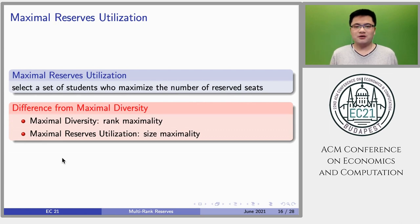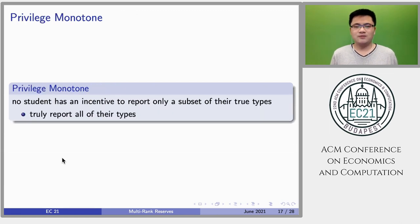The fourth property we considered is maximal reserves utilization. A choice function satisfies this property if it always selects a set of students who maximize the number of reserved seats. Please note the difference between maximal diversity and maximal reserves utilization. Maximal diversity is related with rank maximality, while maximal reserves utilization is related with size maximality.